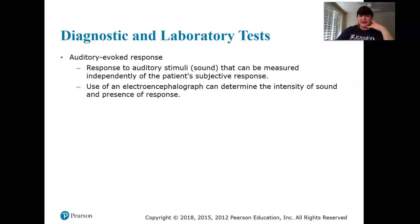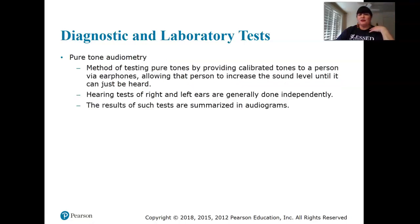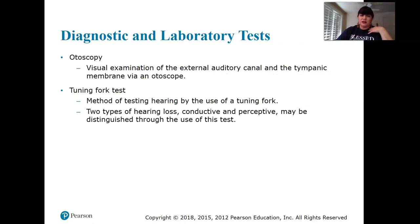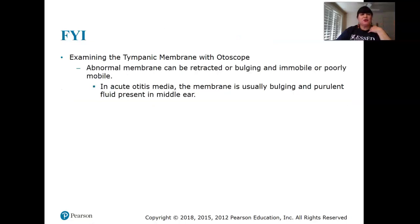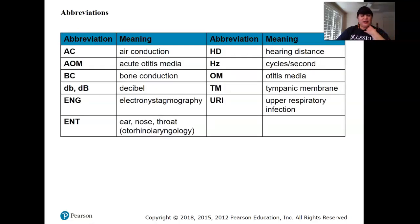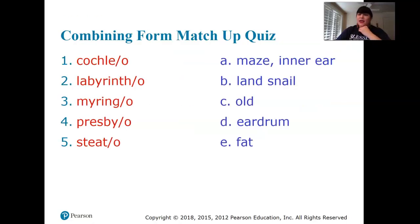Tests for hearing include pure tone audiometry, otoscopy, and the tuning fork Rinne test, which assess different aspects of hearing. There are also various abbreviations related to the ear. That wraps up the ear section — next we're going to get into the eye.